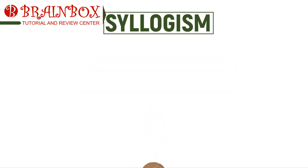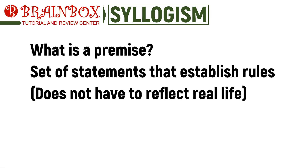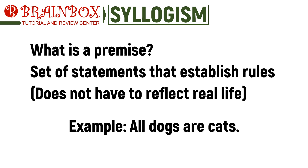Syllogism is the form of reasoning where we derive a conclusion based on two given premises. We use logic rules to ensure that our conclusion strictly follows the established rules. A premise is a set of statements that establish logical rules that we can analyze in order to draw a conclusion or check a conclusion's correctness. Remember that the rules established by premises do not have to reflect real life. Take for example the premise 'all dogs are cats' — common sense will tell you that statement is false; however, that statement is a valid premise. When dealing with syllogism, we need to let go of common sense and just assume that all the premises are true.